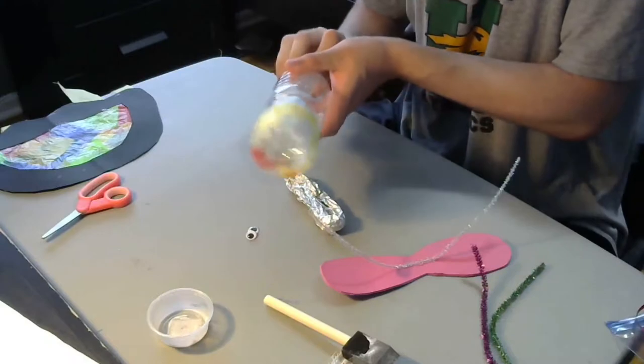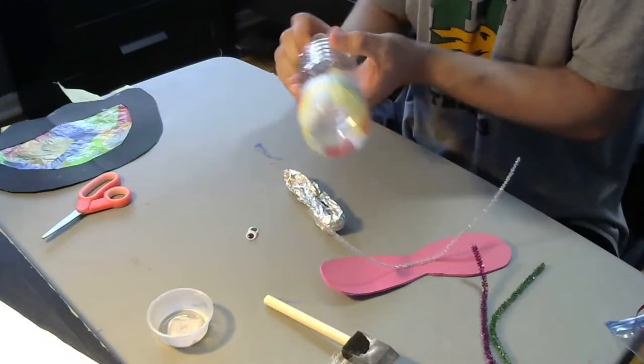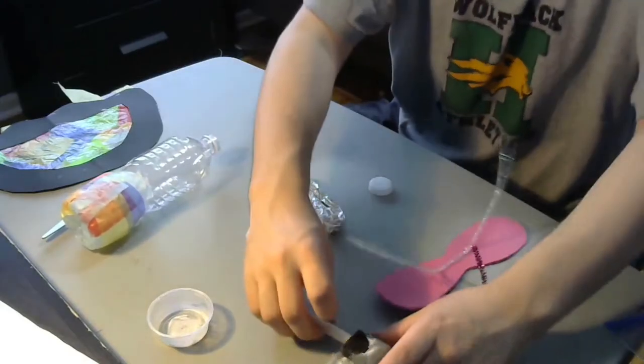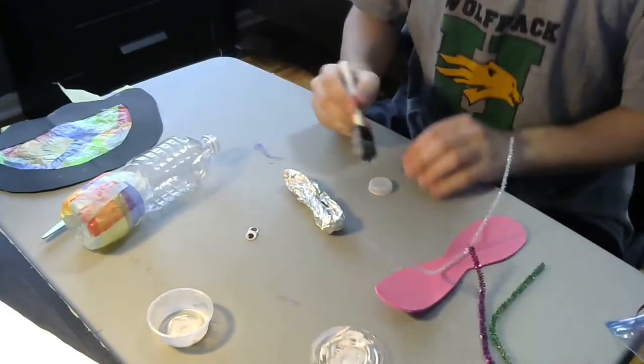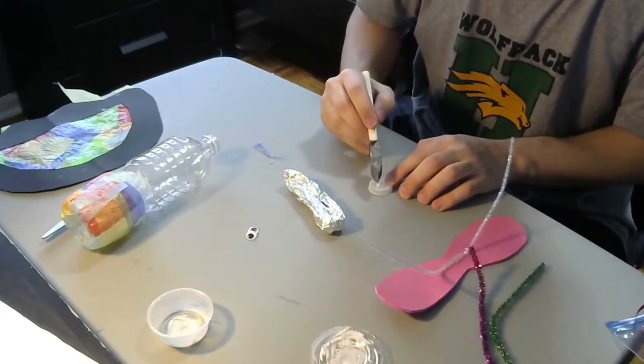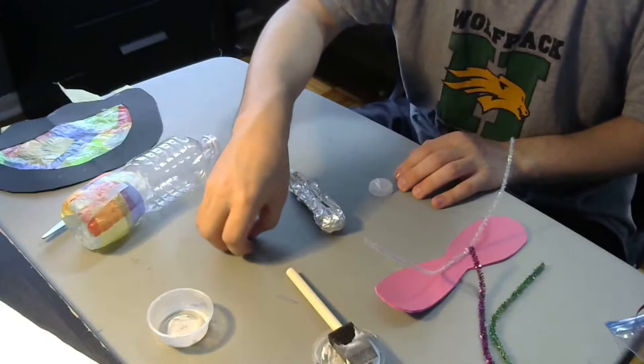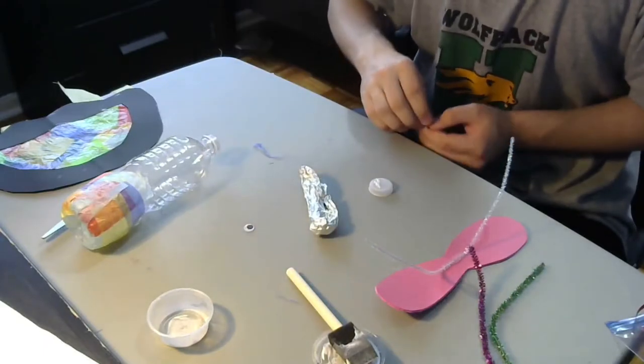There's the cap. Next up, while that's drying, I'm going to pop the cap off. Have the cap. Take your two googly eyes. Take just a bit of glue. Place it on the bottle cap, like so, and drop your two googly eyes and make a head.